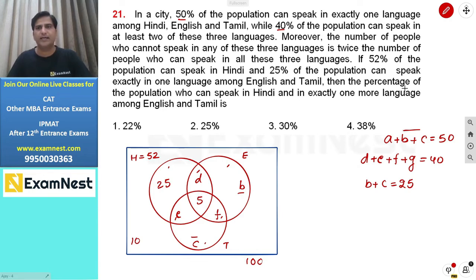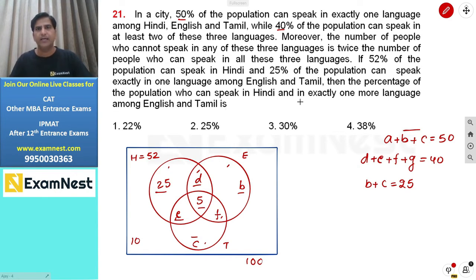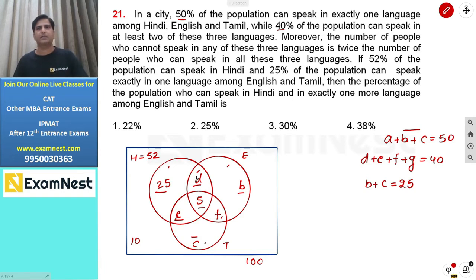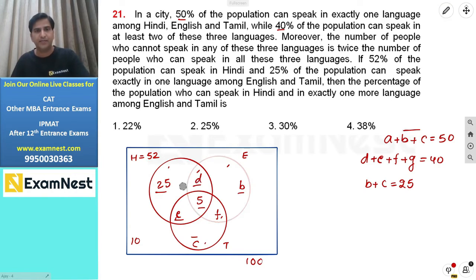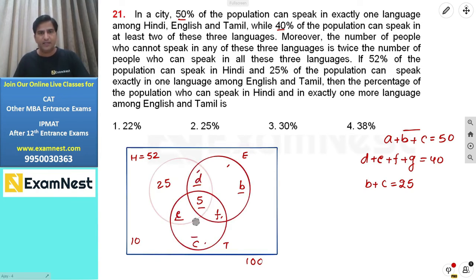The question asks: what percentage of the population can speak Hindi and exactly one more language among English and Tamil? Exactly one more means Hindi plus English (region D) or Hindi plus Tamil (region E) — but not Hindi plus English plus Tamil. So we need D plus E. We exclude A (only Hindi) and G (all three languages).